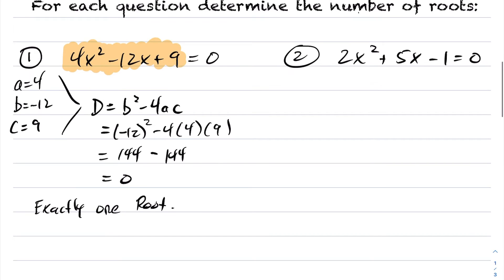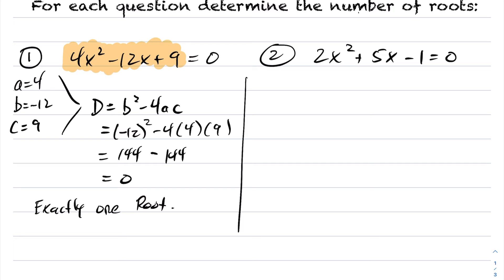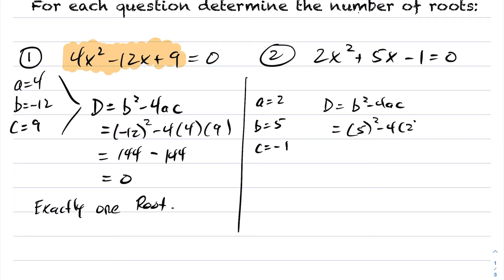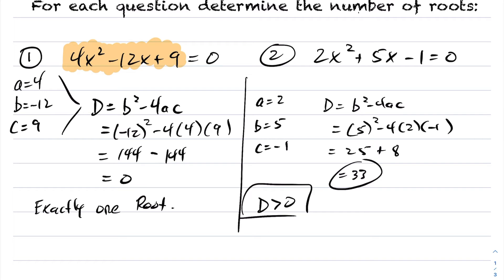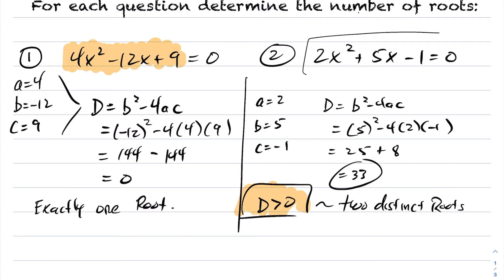For the next example, my a value is 2, my b value is 5, and my c value is negative 1. Plugging into the discriminant: b² minus 4ac gives 5² minus 4(2)(−1) = 25 + 8 = 33. My discriminant is greater than zero, so I have two distinct roots. This quadratic will cross the x-axis at two different locations.